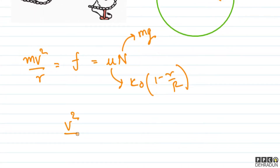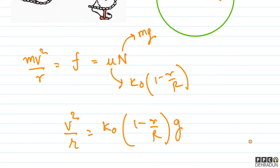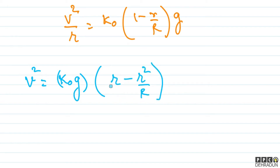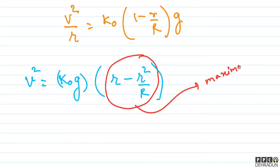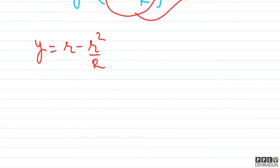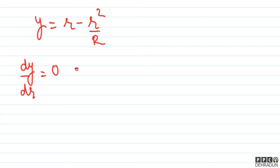So we get v²/r = k₀(1 - r/R)·g. From this, v² = k₀·g · [r - r²/R]. Now, k₀ and g are constants, so to maximize v, we need to maximize the term y = r - r²/R. Setting dy/dr = 0 gives us 1 - 2r/R = 0.